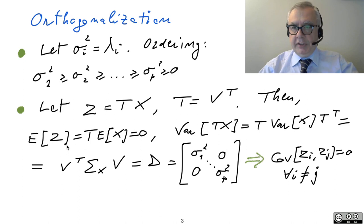And then, it holds that the expectation is still zero. And the variance of TX will be T variance XT transpose. But this is V transpose, sigma XV. And so, this is equal to D, which is, in turn, equal to this diagonal matrix with this sigma one square, sigma two square on the main diagonal.